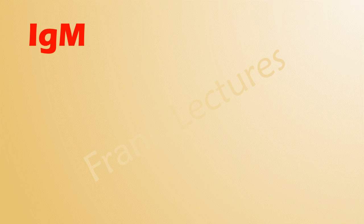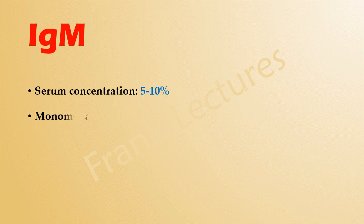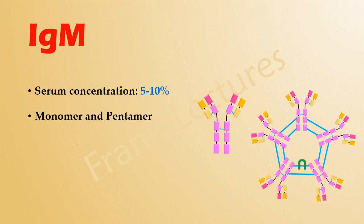Immunoglobulin M constitutes about 5 to 10 percent of the antibody concentration in the serum. It occurs both in monomer and pentamer form in the body.